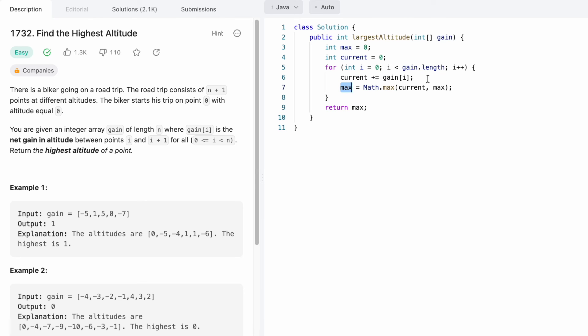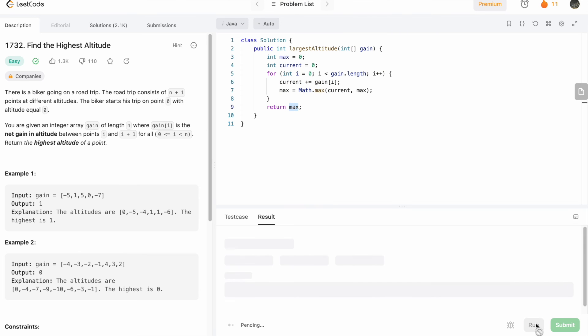Outside this for loop, we'll have our answer inside max, and we'll return max as the output. Now let's run the code. The test cases are running. Let's submit the code, and the solution has been accepted.